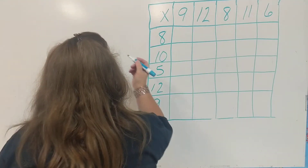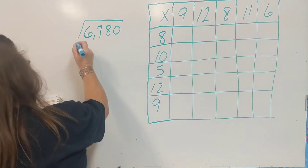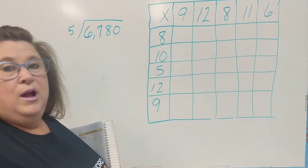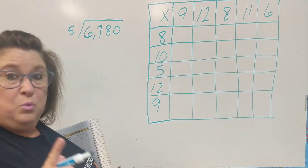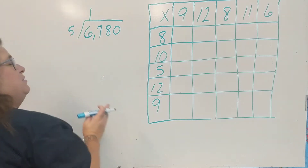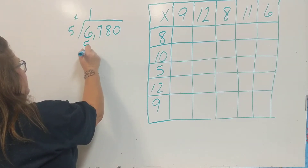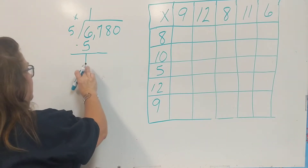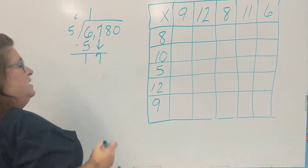We have 6,780 divided by 5. The first thing we're going to do is say, how many times can 5 go into 6? Well, that's obviously just one time. So we put our 1 straight above the 6. We have to be sure we are working in straight columns here. Then we're going to multiply: 1 times 5 is 5. Then we subtract: 6 minus 5 is 1. We compare — is 1 smaller than our divisor 5? It sure is. So we will bring down our next digit, which is a 7.